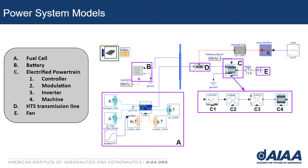Something to note about Modelica is that we have all of those different colored connections between components — these represent the different domains. The dark blue line connecting the battery and the HTS line is the electrical domain; it communicates the voltage and current between the components. The red line going into the HTS line is the thermal domain that looks at the temperature and heat flow into the component. We also have the rotational mechanical domain represented at the end of the machine for the rotor spinning the fan, as well as light green and orange lines in the fuel cell representing the heat, the flow of the coolant and water into the fuel cell.